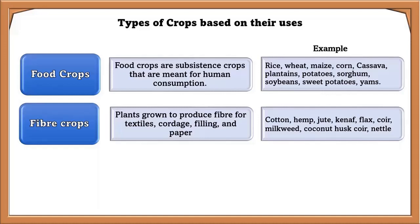Fiber crops are plants grown to produce fiber for textiles, cottage filling, and paper. Some fiber crops include cotton, hemp, jute, flax, corn, milkweed, and coconut husk.